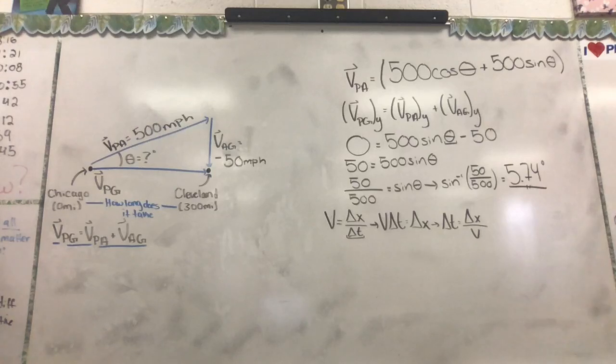So we already have delta X, don't we? What is it? Yeah, 300 miles. So all we have to find is the velocity. And we are in luck because we just found an angle.